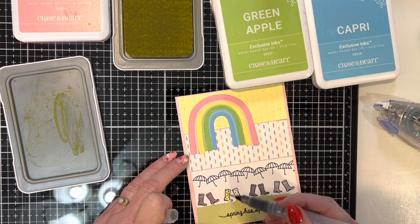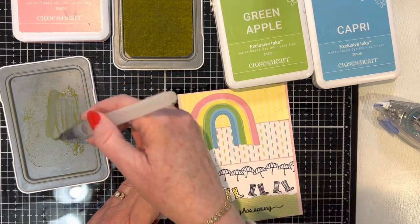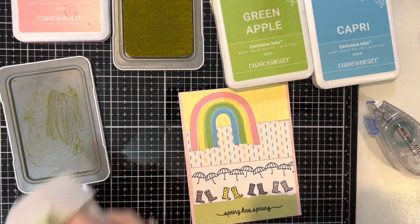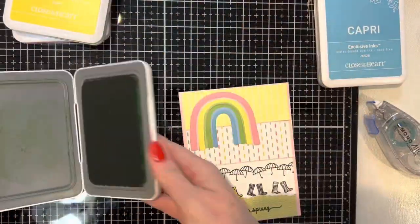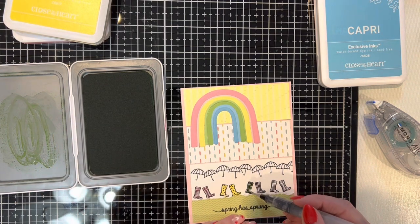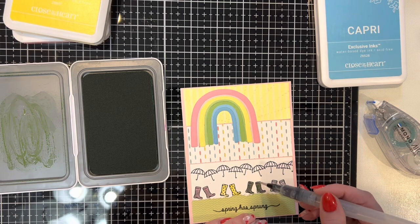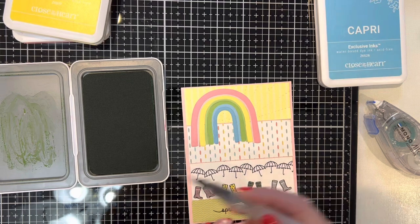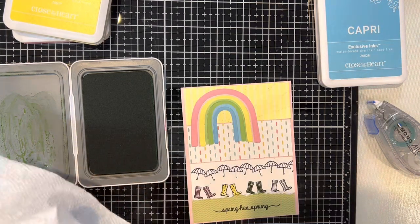I go through and I do that with all four colors of inks, and I believe I used Flamingo, Lemonade, Green Apple, and Capri. But if you have another ink that's similar or close, you could probably get away with another shade of some of those colors. If it's a darker blue, I would just make sure you add enough water to lighten up the color a little. But you can get away with some of the other colors as well.